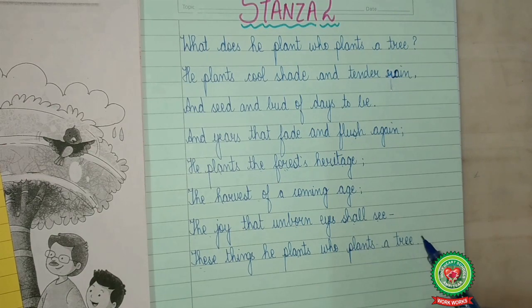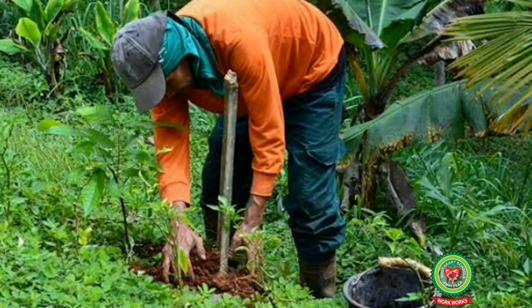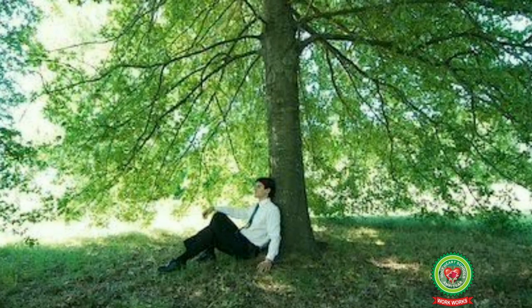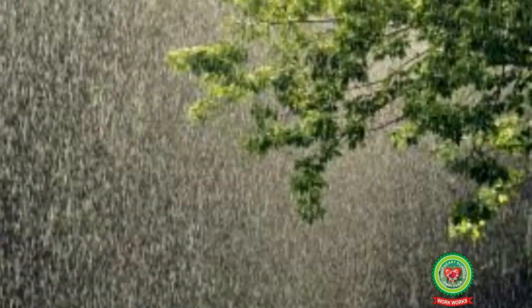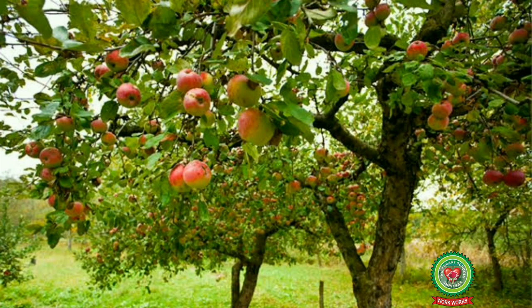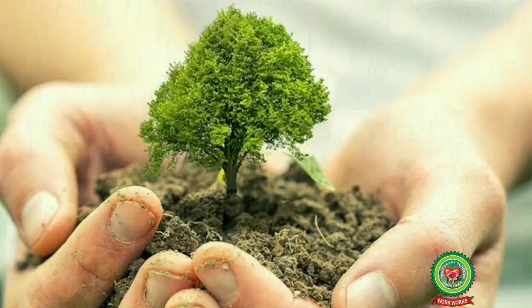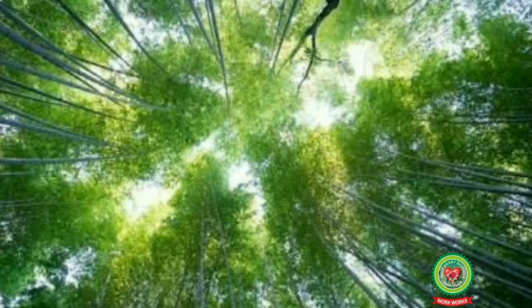In this stanza, the poet asks again what does he plant who plants a tree. He then answers that the trees we plant provide us cool shade in the scorching heat of summer and showers of rain. He says that a tree produces seeds and buds for future reproduction. Moreover, today's single tree may turn into a forest someday, which our future generation will be delighted to have.